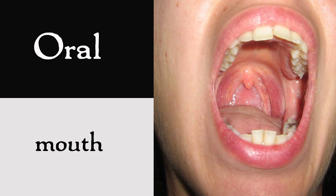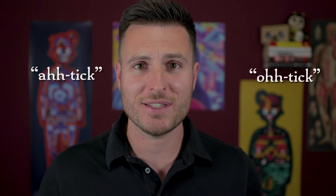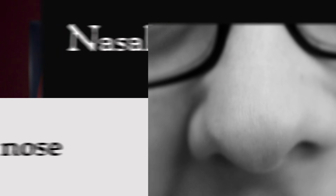The buccal regions are your cheeks, and you know what you put in those? Bugles, bagels, bokeh burgers. Oral relates to anything with the mouth — you can't say the word oral without making an ooooh. The otic region is your ear. The orbital or ocular region relates to your eyes — it's kind of like your eyes are orbiting around in your head. Nasal is your nose, this one's easy. Frontal is your forehead, the front of your skull. That's it for your head.